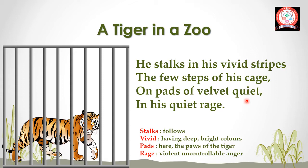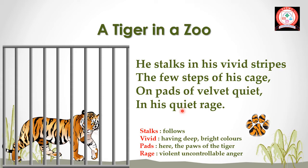The poet tells us that when the tiger is walking around in the cage, he is very quiet — his footsteps cannot be heard. And 'in his quiet rage' means the tiger is at the same time quiet and extremely angry. We know the tiger is an aggressive animal. He is angry perhaps because he is in a cage, but he is not showing his anger — he is quiet, walking around in the small cage.